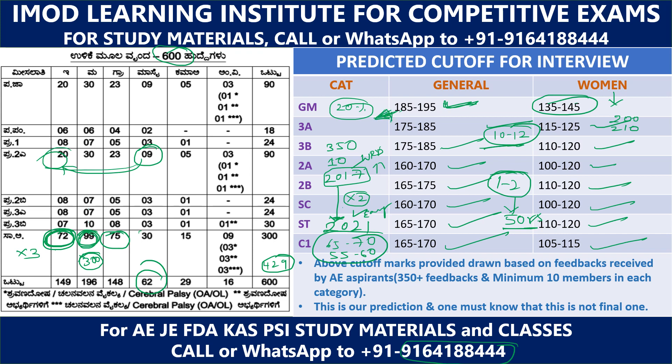This cut-off is not the final one. There will be objections. Compared to 2017, the 2021 first paper is easier. So this is just for your reference.